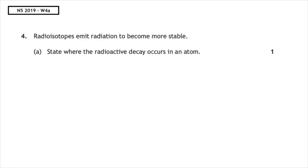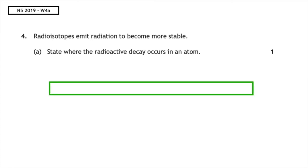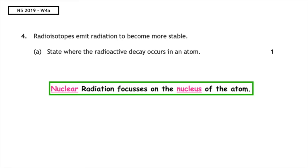This past paper question is from National 5, 2019, written paper A. Radioisotopes emit radiation to become more stable. The question asks: state where the radioactive decay occurs in an atom. Since we are focusing on nuclear chemistry, the radioactive decay occurs in the nucleus.